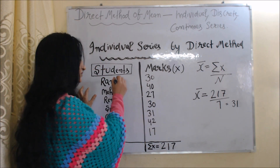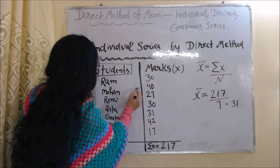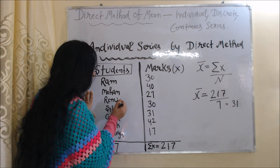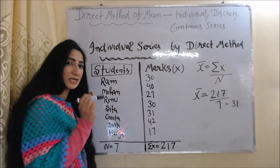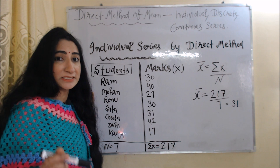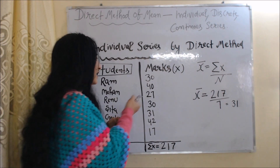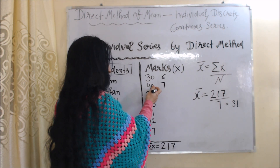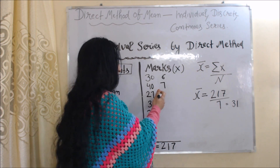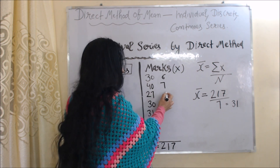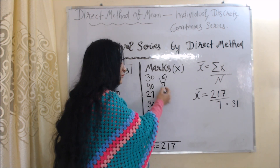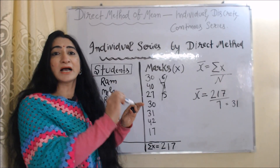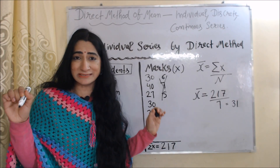For example, 30 marks is obtained by Ram only, 40 marks is obtained by Mohan only, and 27 marks is obtained by Renu only. But in the case of frequencies, it would be written as 6 marks obtained by 30 students, 7 marks obtained by 40 students, and 27 marks obtained by 5 students. But here, frequencies are not given — it represents individual marks of students, because this is individual series.